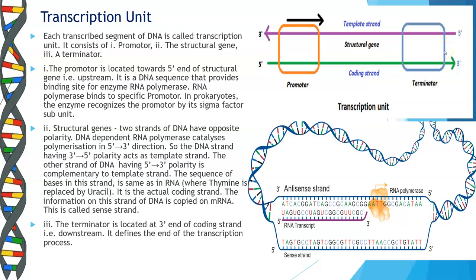Have a look at this figure. In the 3' to 5' direction, that is your antisense strand, it acts as the template strand. The sense strand runs in the 5' to 3' direction — this is your coding strand. The RNA polymerase binds to the promoter region and the process of transcription takes place in the 5' to 3' direction. Complementary nucleotides to the antisense strand come in to form the mRNA, with thymine replaced by uracil since thymine is never present in RNA.